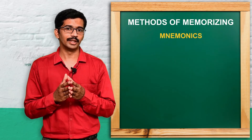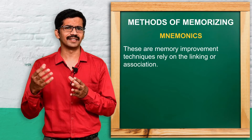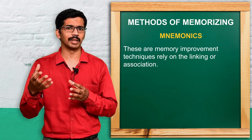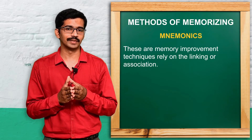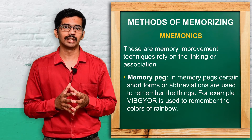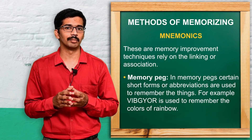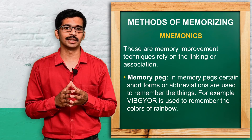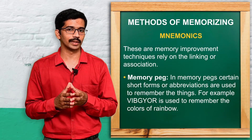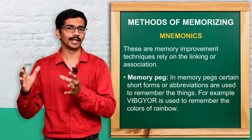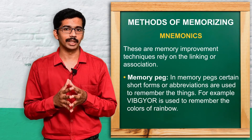Come to the next one: mnemonic devices. It is nothing but certain techniques we are using to assist the memory — that is mnemonic devices. The first one is a memory peg. Memory peg is nothing but we'll be using certain short forms or abbreviations to remember certain things — that is termed as memory pegs. The best example we know from school: to remember the colors of the rainbow we use VIBGYOR. That is the best example for memory pegs.